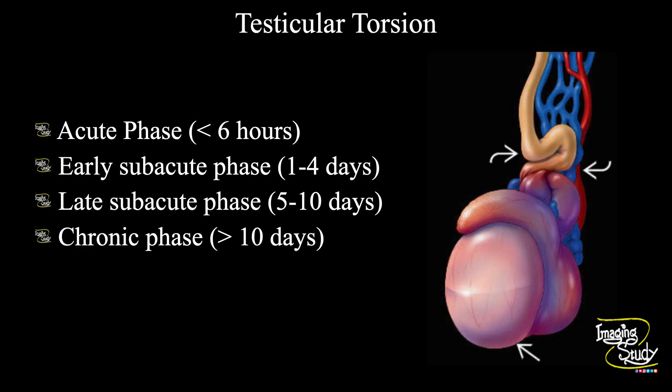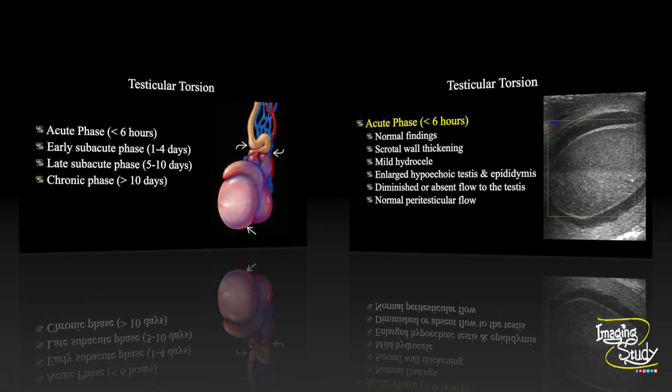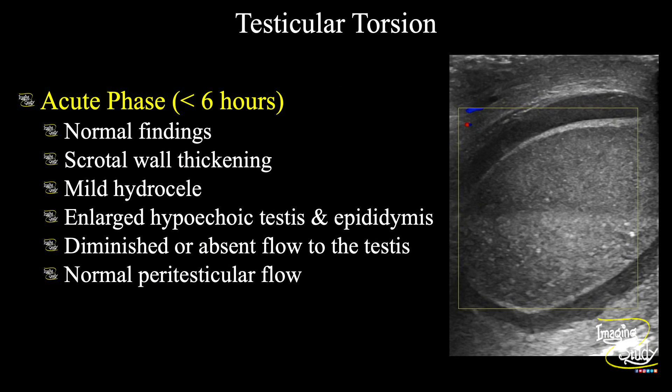We have four phases of testicular torsion. In the acute phase, the findings may be normal; you may see scrotal skin thickening and mild hydrocele. The testes and epididymis get enlarged and hypoechoic. On color Doppler, there won't be any intratesticular flow but normal peritesticular vascularity.